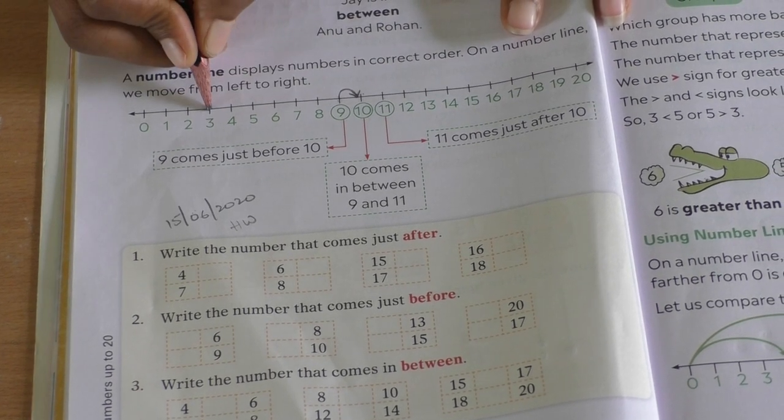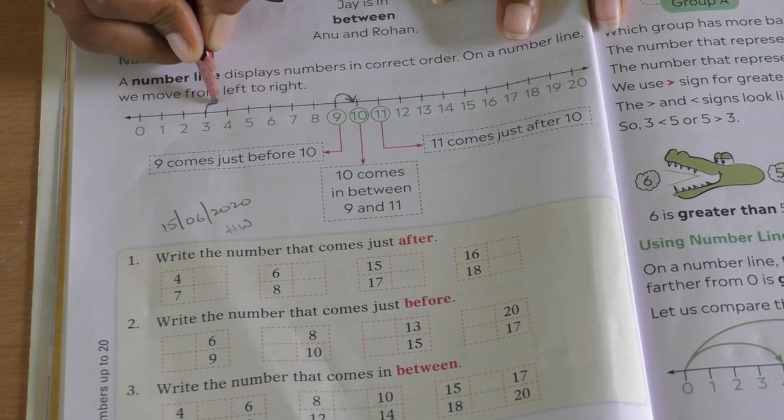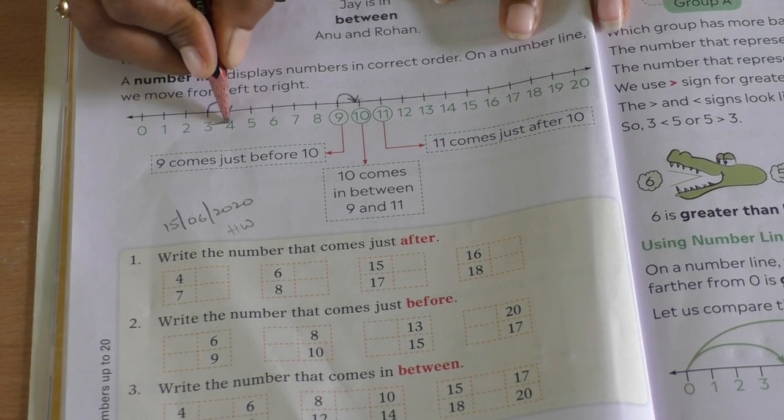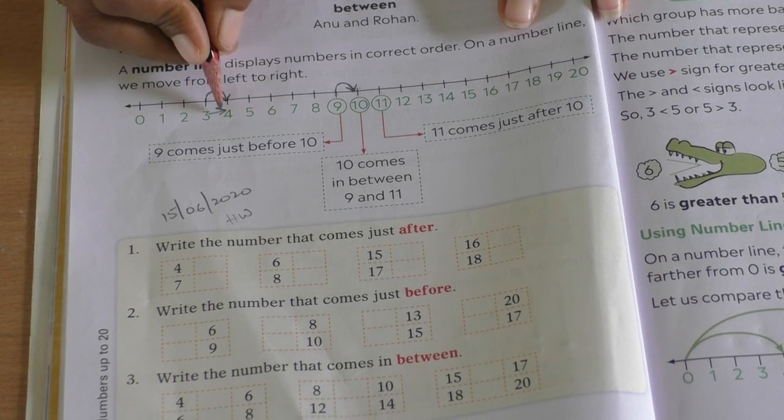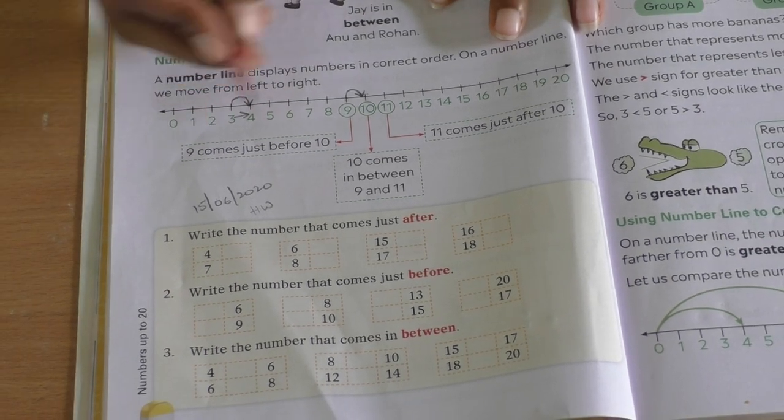Similarly, if we take 3, what comes after 3? 4. In the number line, the number which is behind would be the number which comes after.